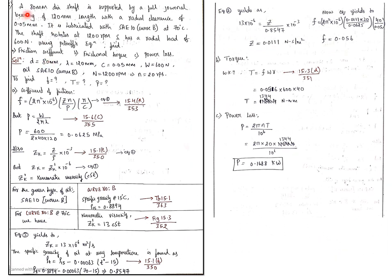Second problem: an 80 mm diameter shaft is supported by a full journal bearing of 120 mm length with a radial clearance. If he has given radial clearance, take it directly as C; if diametral clearance is given, take C as 2C. It is lubricated with oil curve B at 70 degrees Celsius. The shaft rotates at 1200 RPM and has a radial load of 600 N. Using Petrov's equation, find: friction coefficient, frictional torque, and power loss. Write down the given values: diameter, length, radial clearance, radial load, oil curve B, and convert RPM to RPS (small n).